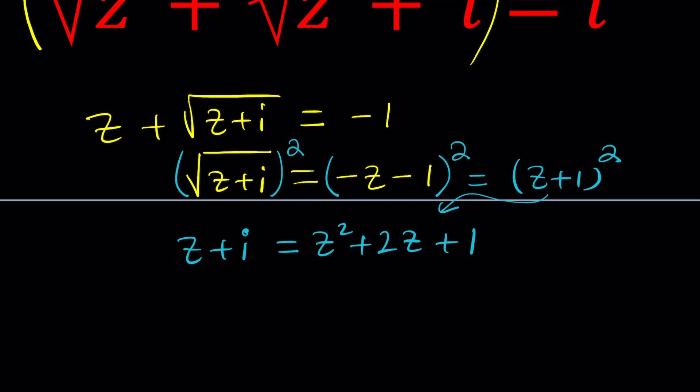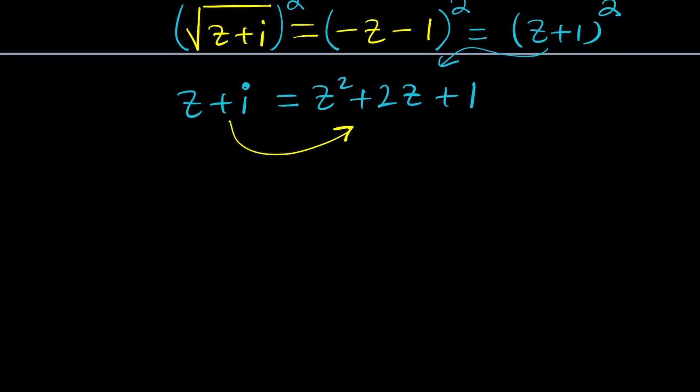Uh-oh, nothing cancelled out. I was hoping that something would cancel out, but it didn't. That's okay. Let's go ahead and put everything on the same side, and I think the right-hand side is better, because it has z squared. And then when I subtract z from it, 2z minus z is going to be 1z. And then we're going to have plus 1 minus i equals 0. So, our goal was to turn this into a quadratic equation, and we got it.